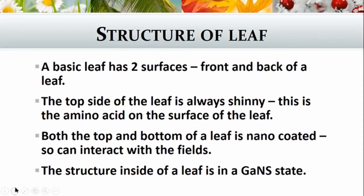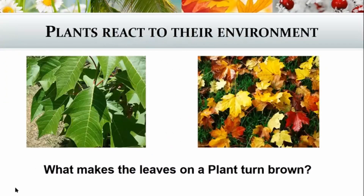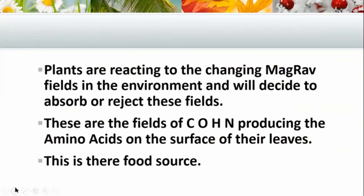The structure inside of a leaf is in a GANS state — that's very important to understand. Internally within the plants it's all in a GANS state, same as internally within the human body where everything is in a GANS state. So I'm going to look at how plants react to the environment and what makes the leaves on the plant turn brown and fall off. The plants are reacting to these changes in MaGRA fields in the environment, and they will decide, according to their RNA and DNA, to absorb or reject these fields.